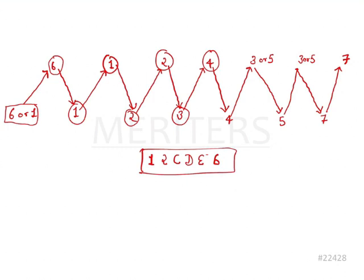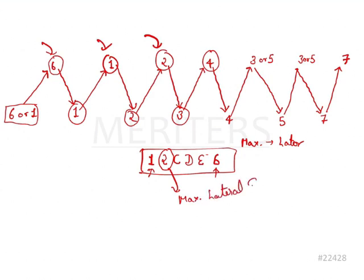Now, which tooth comes first? As we've seen, 6 will be coming first — either upper or lower. We'll consider the maxillary arch since those teeth come later. So 6 comes first, then after 6 comes 1, then comes 2 — the maxillary lateral incisor. We should understand that the age of eruption of the maxillary lateral incisor from the chronological table is 8 to 9 years.